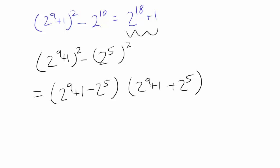And you may say, wow, what's going on? Well, x squared minus y squared is the same thing as x minus y times x plus y. Our x is 2 to the 9th plus 1. Our y is 2 to the 5th. So we are just plugging this in to match the difference of squares. And we may be able to do something with this expression.